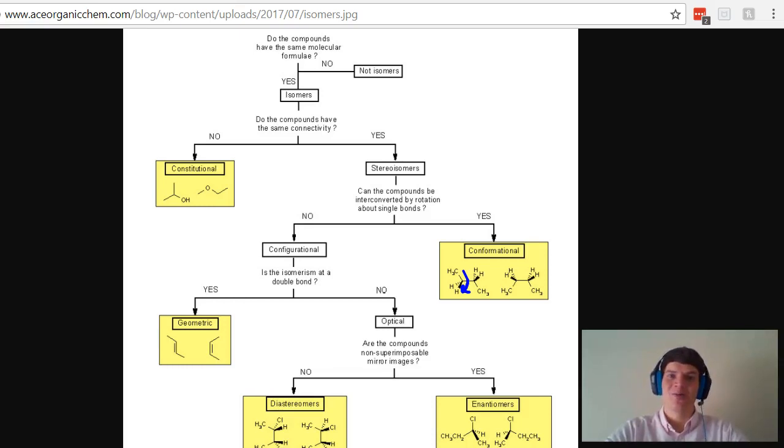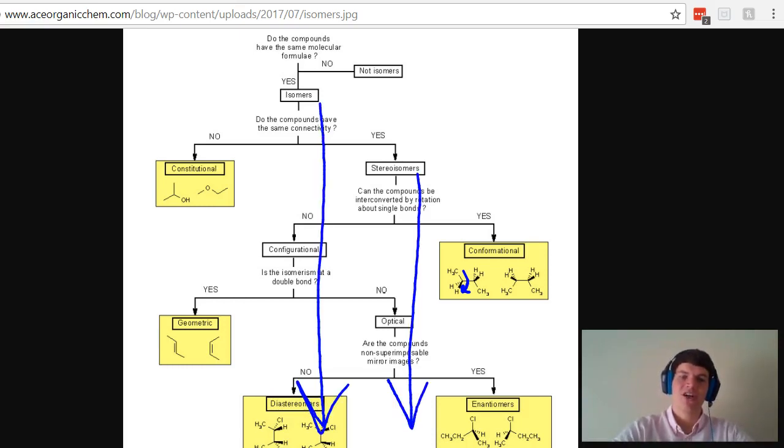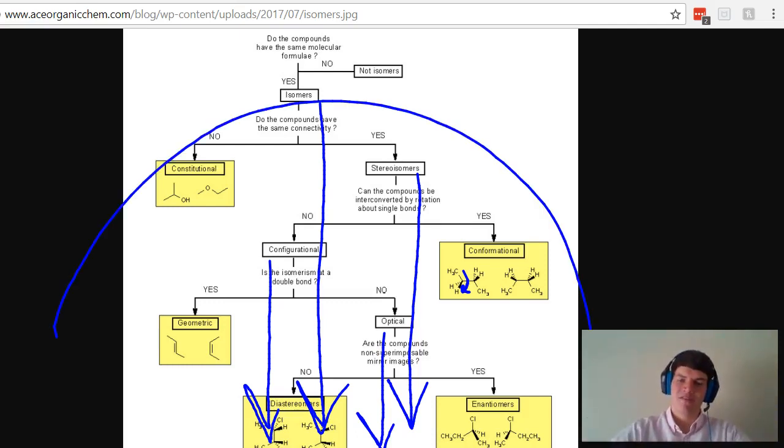And something to make note of is that everything that falls under the white boxed labels is part of that category. For instance, everything below this label is an isomer. Everything below this label is a stereoisomer. Everything below here is a configurational isomer. Everything below here is an optical isomer. So these higher up categories are umbrella terms for everything that falls underneath it.